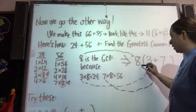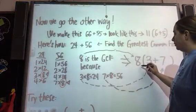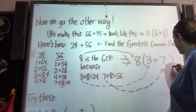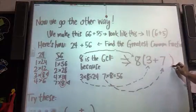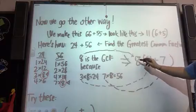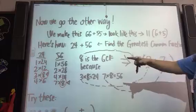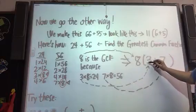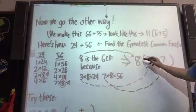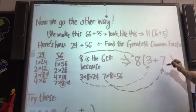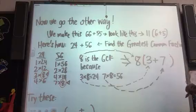So 8 is going to go on the outside of that bracketed area. So here's your brackets. 8 is going to go on the outside. Then we just go, well, 8 times what is 24? Well, 3. So 3 goes in the inside, plus 8 times what is 56, and it's 7. So we choose 7, and that is how you break it down.